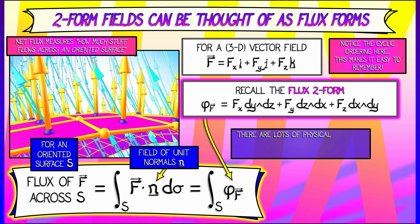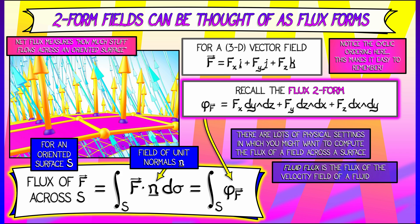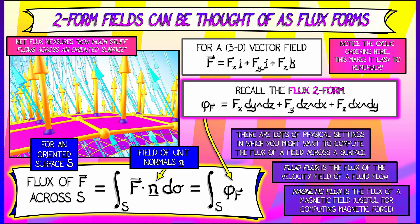That's a great reason for wanting to do this, and there are lots of physical settings in which you really do want to compute the flux of a field across a surface. For example, let's say you're looking at a fluid flow that has a velocity field. Then fluid flux is how much stuff is flowing past a surface, like an open window, for example. Or in the case of a magnetic field, you might care about the magnetic flux. The flux of that field across some surface, that's useful in physics for computing things like magnetic force, other stuff like that.